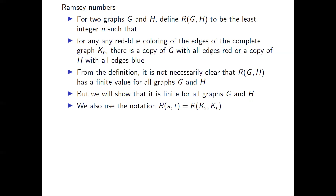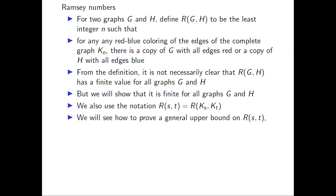In order to show that bound, we're going to use a shorthand notation. We'll let R(s, t) = R(K_s, K_t). And we're going to see how to prove a general upper bound on R(s, t) for any s and t greater than or equal to one. Since we'll have a finite upper bound on R(s, t), that clearly implies that R(s, t) is finite for all s and t.